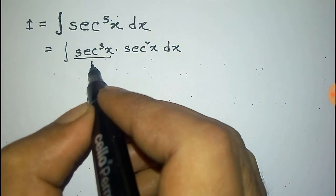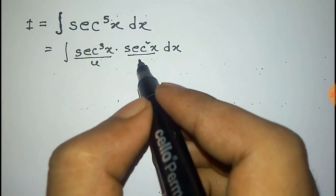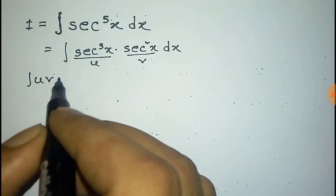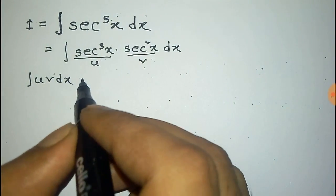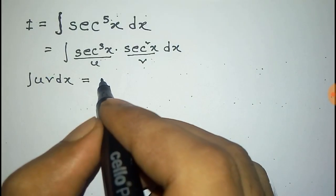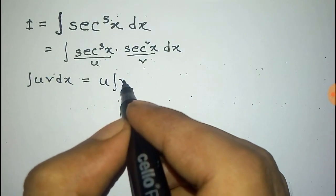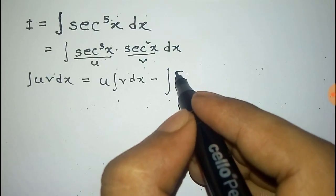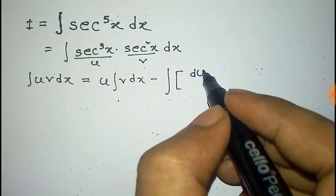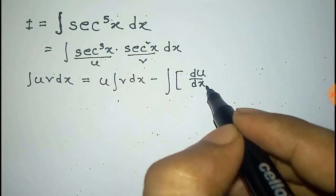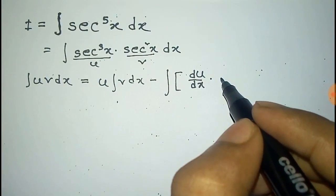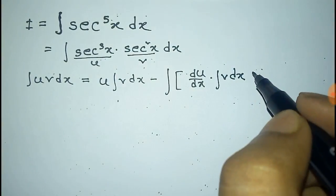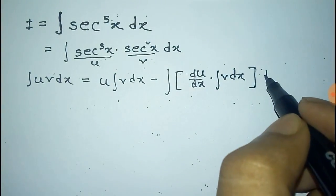Now we take sec cubic as u and sec square x as v. We use the formula of integration by parts, which is given by u times the integration of v dx, minus the total integration of the derivative of u into the integration of v dx, into dx.